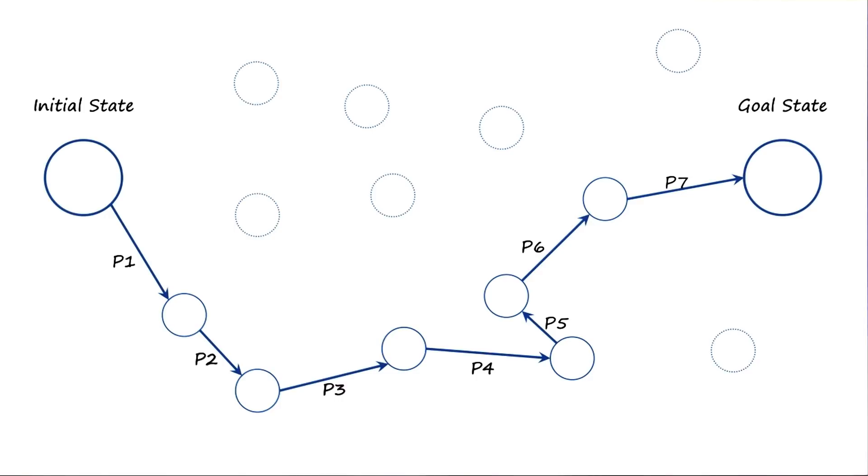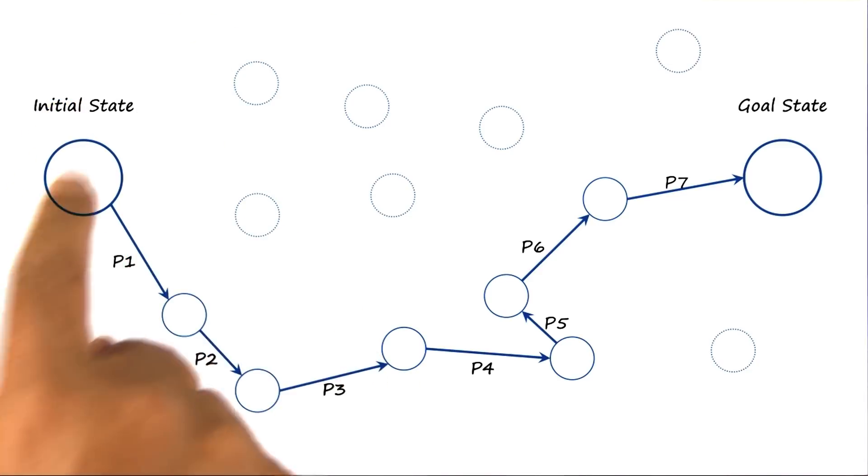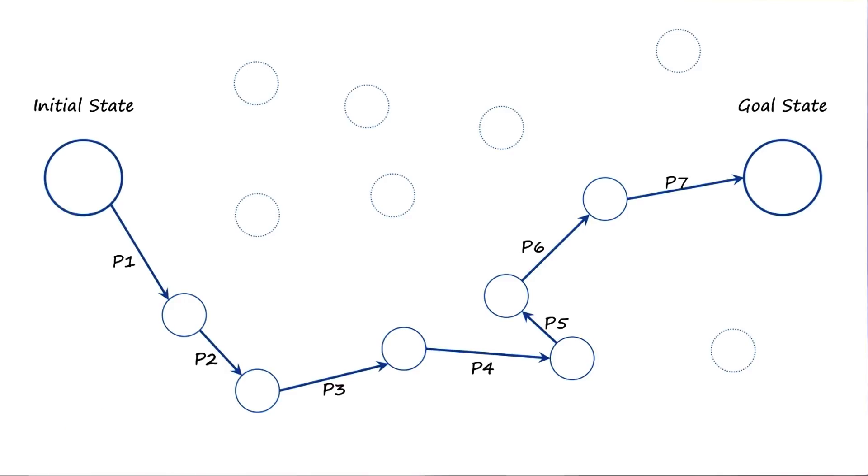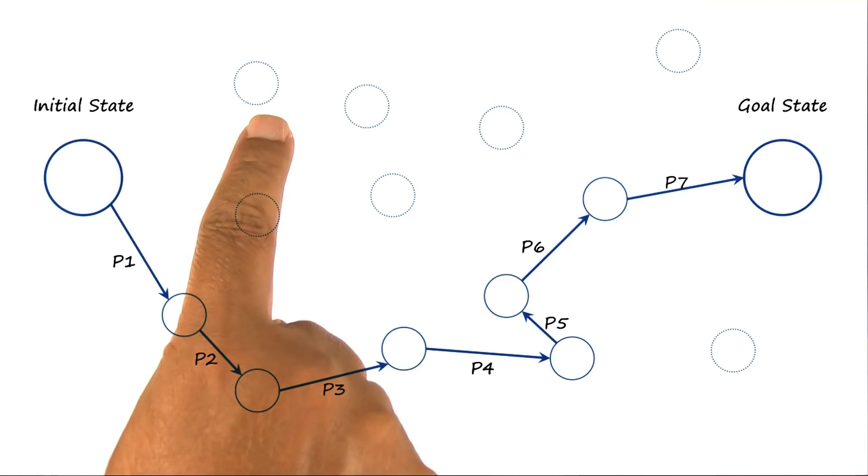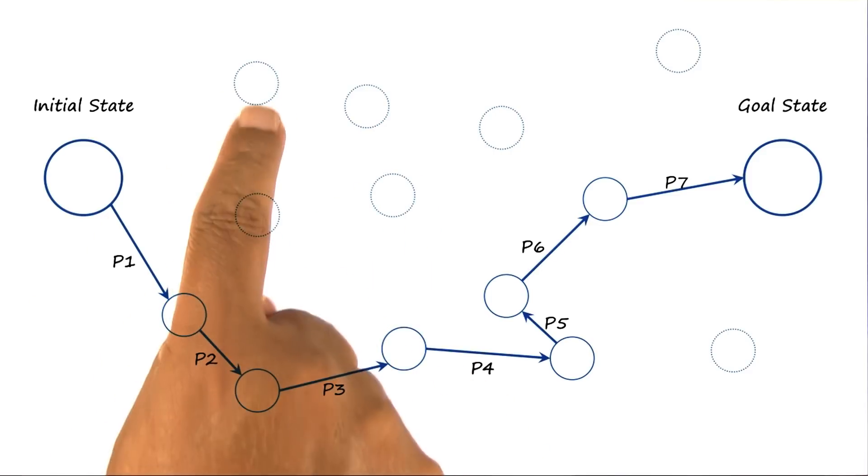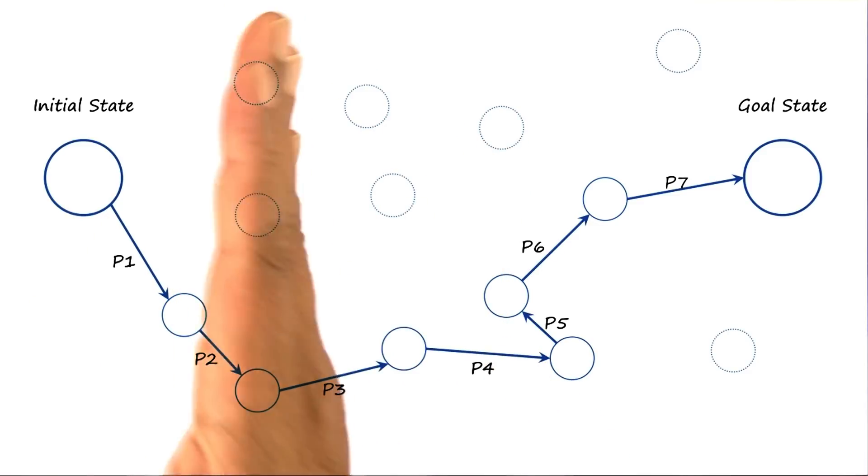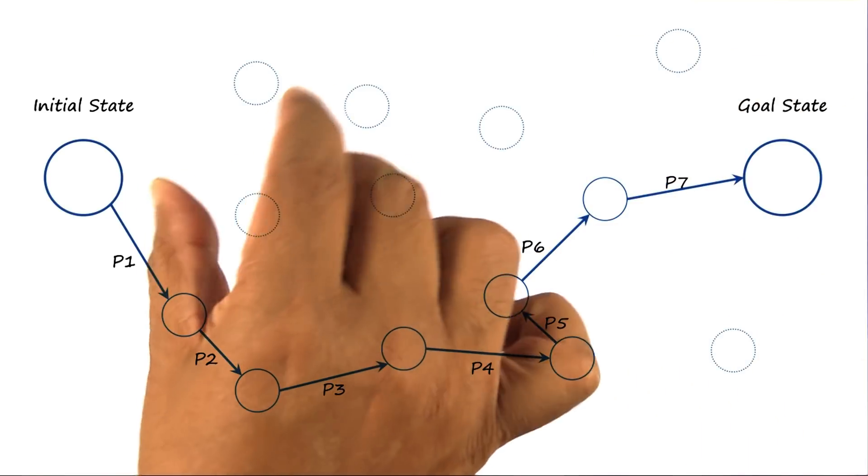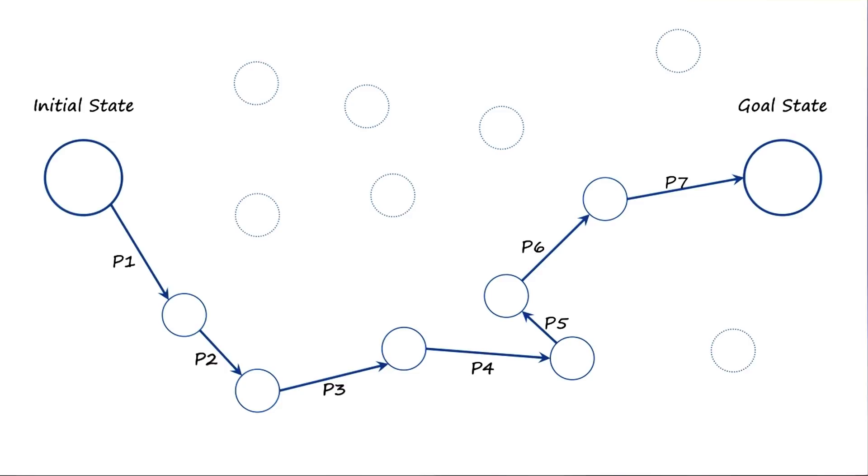Here is what we could do. Given the initial state, we could apply to the initial state all the operators that are applicable to the initial state. That will give us a range of states. Then to each successive state, we could apply all the operators that were available to that state. That will give us more states. And so we could keep on expanding this. But I'm sure you can see what will happen. There'll be a combinatorial explosion in this. Search for this problem is extremely inefficient.